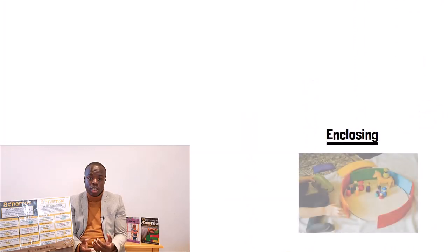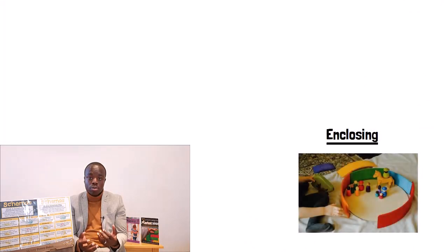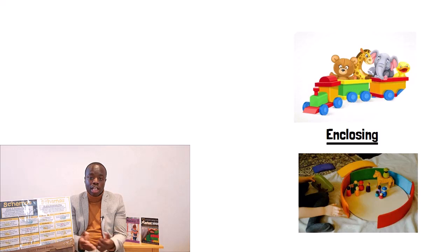This involves containing things, creating borders around objects or themselves. An example of where children might demonstrate this in their play is by creating fences or barricades around things like animals or themselves. So for example, they might build a train track and put animals in the middle or put borders around their artwork.